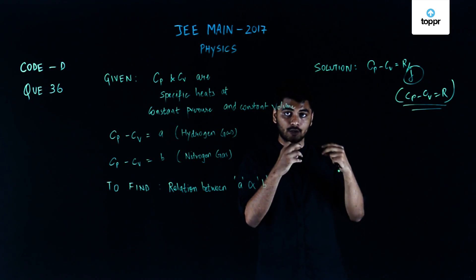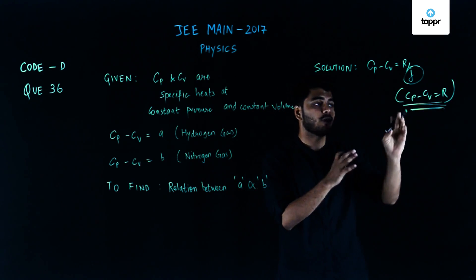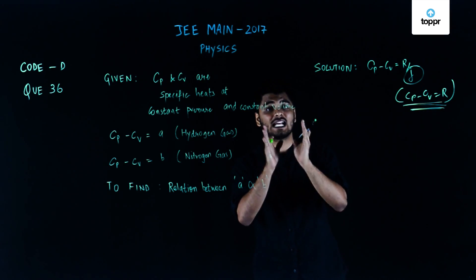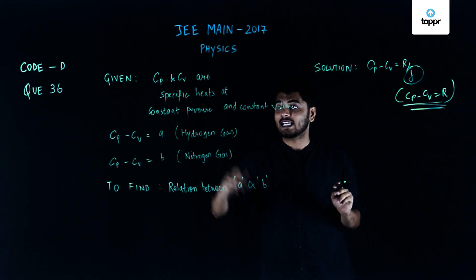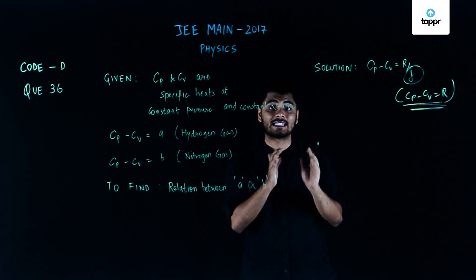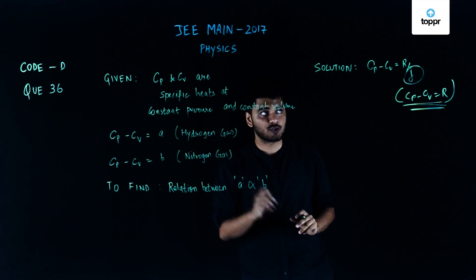One thing we tend to forget is Cp minus Cv equals R is generally what we follow because the gas in consideration is a single gas and the gas is not changed. In this question, two different gases have been given and that was the trick behind this question. There was hydrogen gas and nitrogen gas.